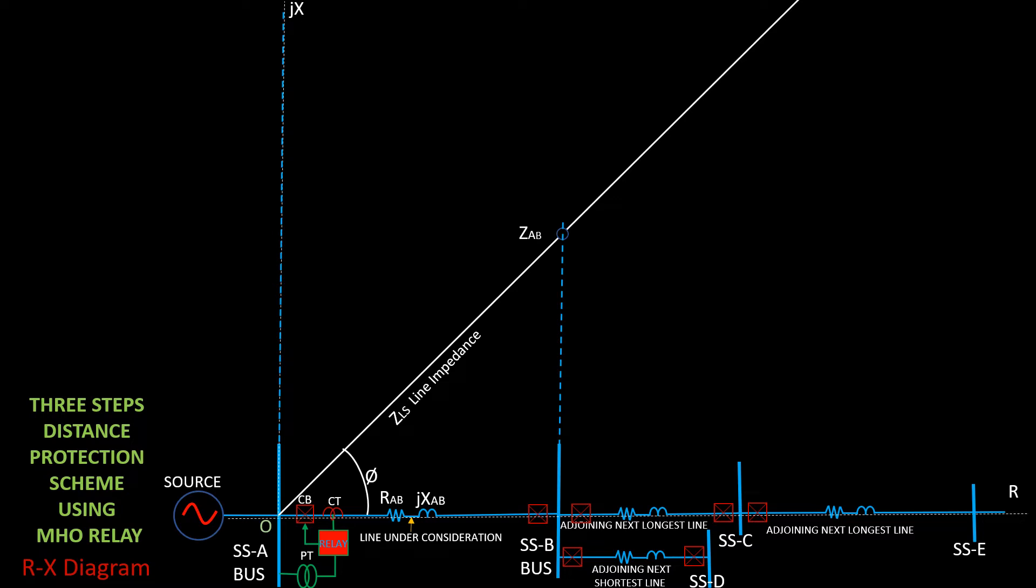Between bus at substation A and bus at substation B. Zbc, the calculated impedance of the line between substation B and substation C.